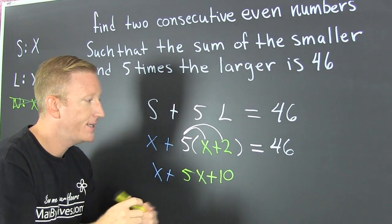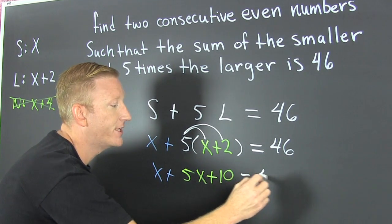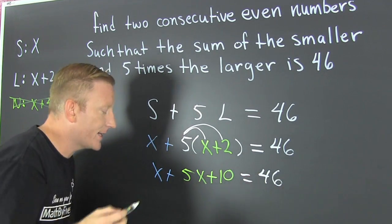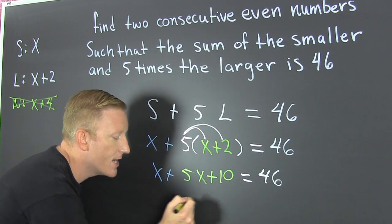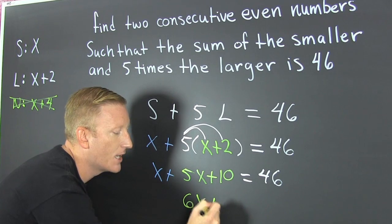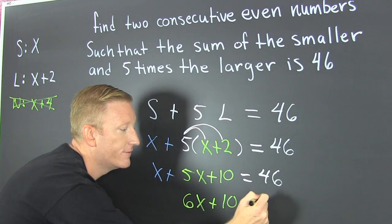Then, that's still going to be equal to 46. I'm going to gather, collect, and combine. And I'm going to get 6x plus 10 is 46.